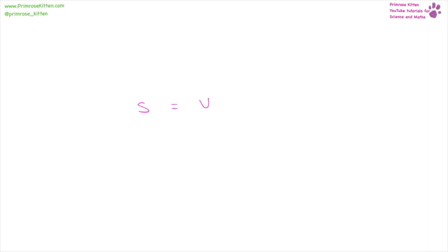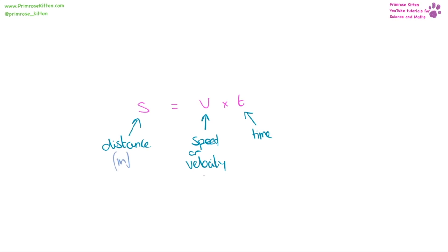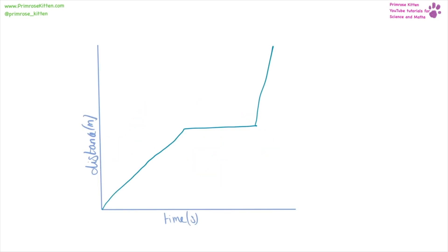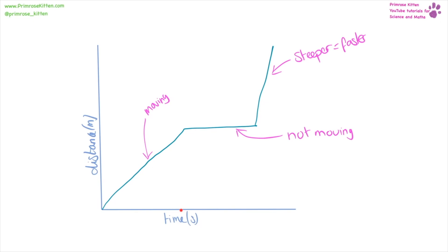Distance equals speed times time. Distance is measured in meters, speed or velocity is measured in meters per second, and time is measured in seconds. Distance-time graphs tell us lots of information. If we have a slope that is increasing we are moving, and the steeper the slope the faster we are moving. If it is a flat line it is not moving — as time is increasing, distance is not increasing. We can calculate speed as the gradient, which is up over across, i.e. distance over time.